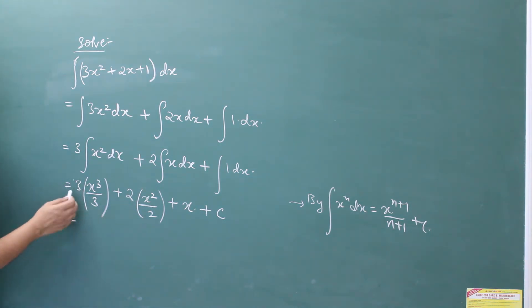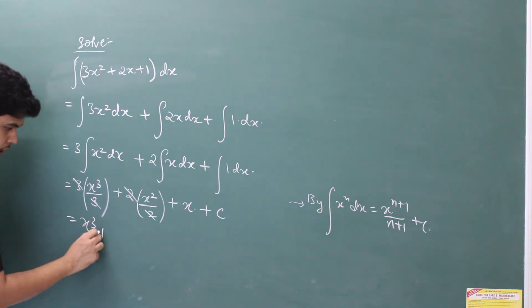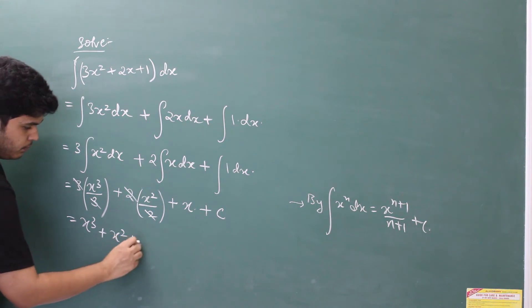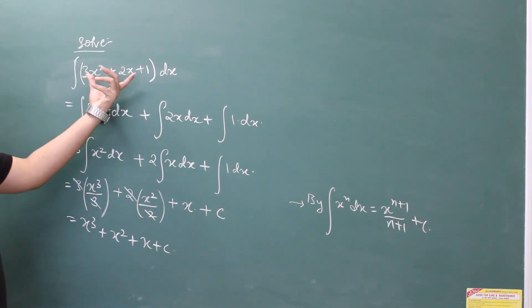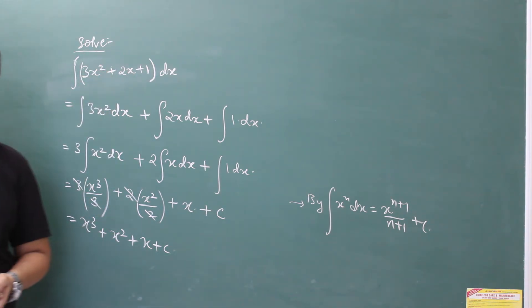Now let's cancel out what can be cancelled: 3 and 3, 2 and 2. So what are we left with? x cubed plus x squared plus x plus c. This is the solution for this question. This is how it has to be done. Let's move to the next question.